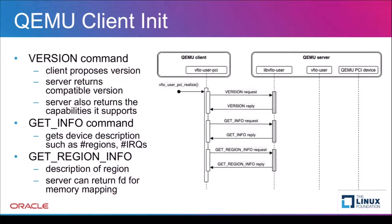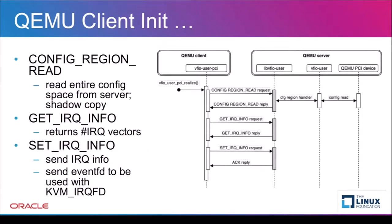The getinfo command is used by the client to request device description from the server, such as number of regions, number of IRQ types supported, and whether the device supports reset. To get a description for each region, the client requests the server by sending getregioninfo. The server replies with the read and write permissions, whether it can be memory-mapped, region index, size, and offset. When the guest executes load or store operations to an unmapped device region, the client forwards these operations to the server with user region read and write messages. The server will reply with data from the device on read operations, or an acknowledgment on write operations.